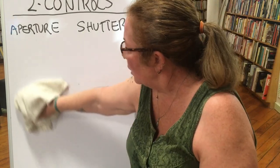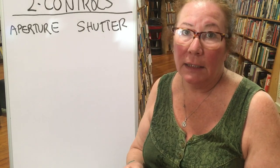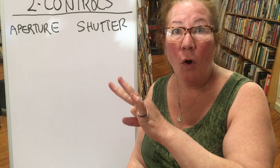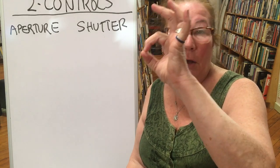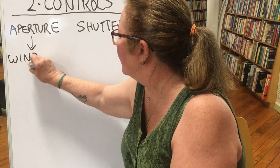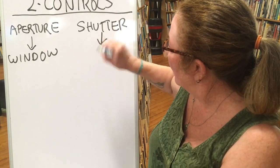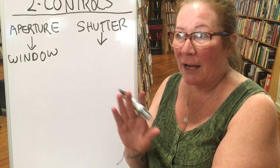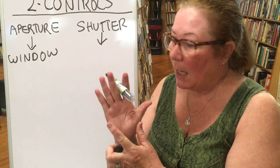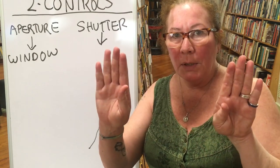The aperture is normally located inside the lens. It's a series of overlapping metal leaves — a diaphragm — that can go from a very small pinhole opening up to a pretty good-sized opening. Think of the aperture as a window. The shutter is located at the back of the camera at the film plane, right in front of whatever your image is being recorded on. The shutter is like a curtain — it opens to let light in and then closes.